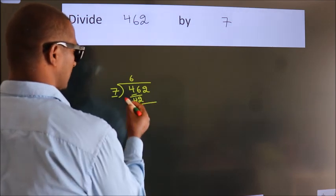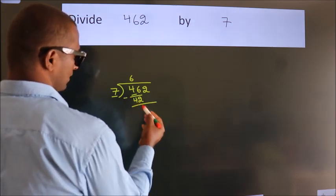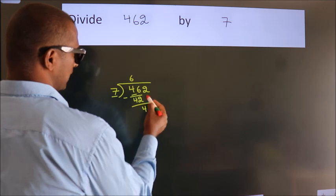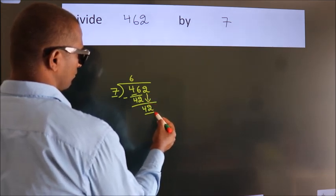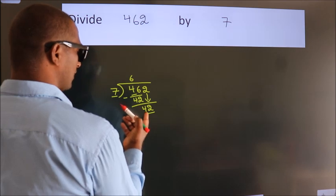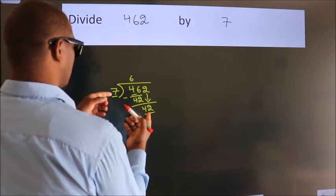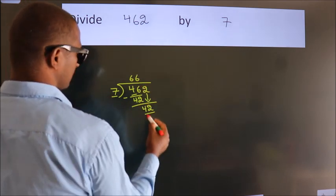Now, we should subtract. We get 4. After this, bring down the beside number. So, 2 down. So, 42. When do we get 42? In 7 table, 7, 6, 42.